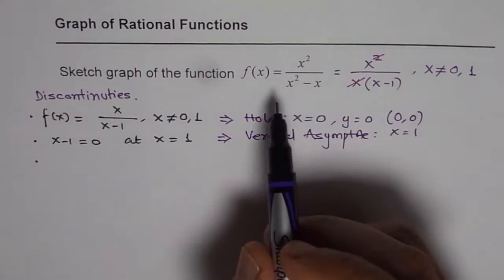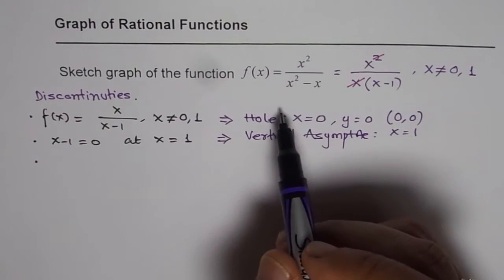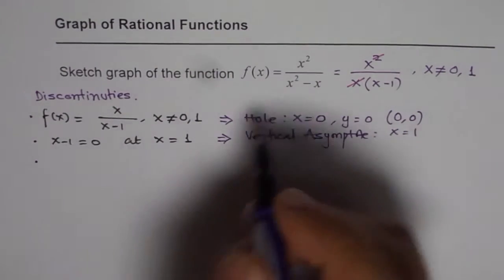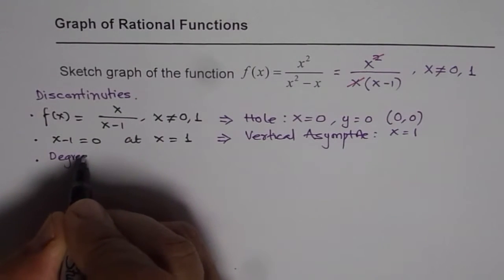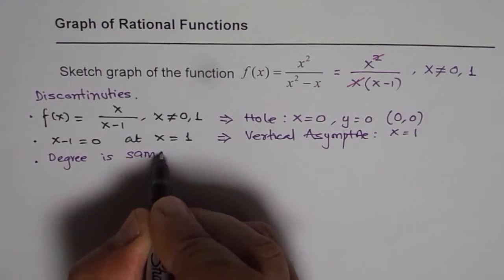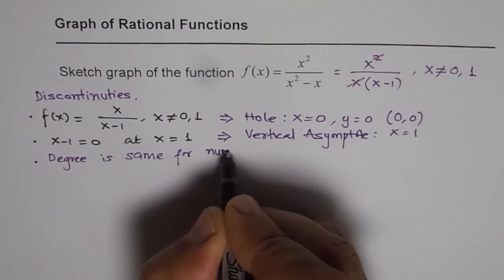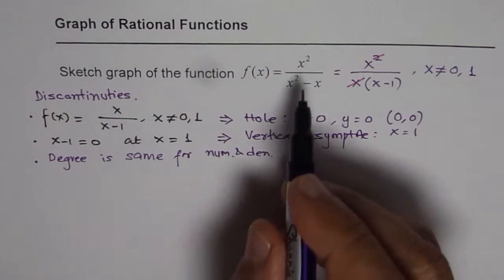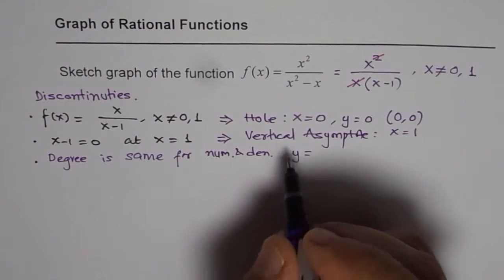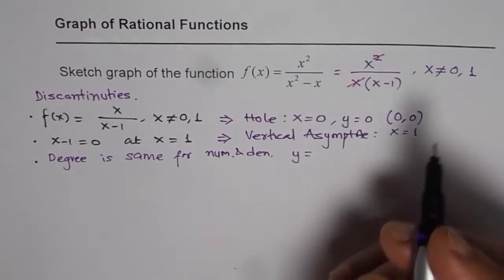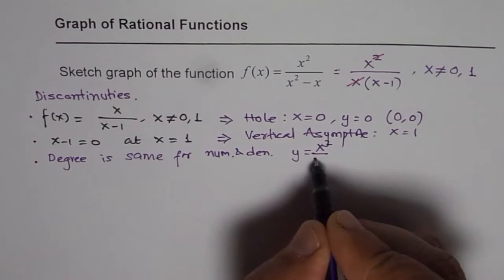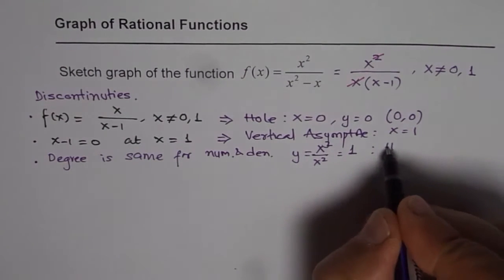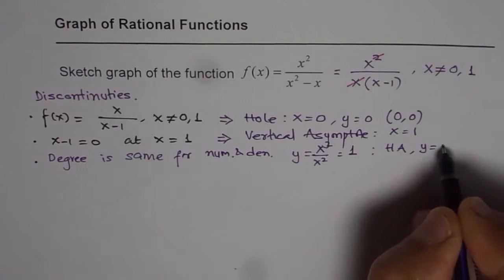Now let's look at the end behavior, or the horizontal asymptote. The degree of the numerator and denominator is the same. Since the degrees are equal, we have a horizontal asymptote at y equals the ratio of leading coefficients. We can write x² over x², which gives us 1. Therefore we have a horizontal asymptote at y = 1.